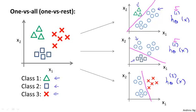So to summarize, what we've done is we'll fit three classifiers, so for i equals 1, 2, 3, we'll fit a classifier h superscript i subscript theta of x, that's trying to estimate what is the probability that y is equal to class i, given x and parameterized by theta.